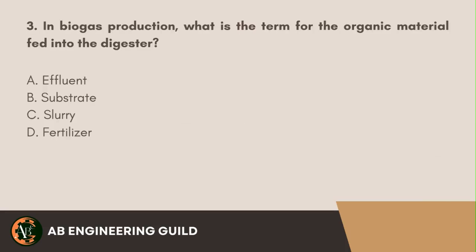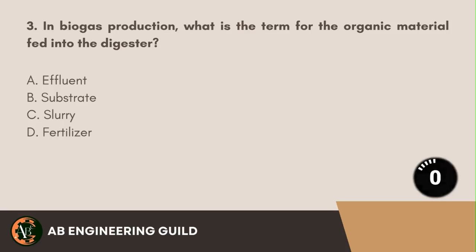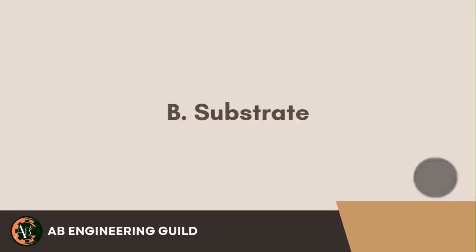Question 3: In biogas production, what is the term for the organic material fed into the digester? A. Effluent. B. Substrate. C. Slurry. D. Fertilizer. Answer: B. Substrate.